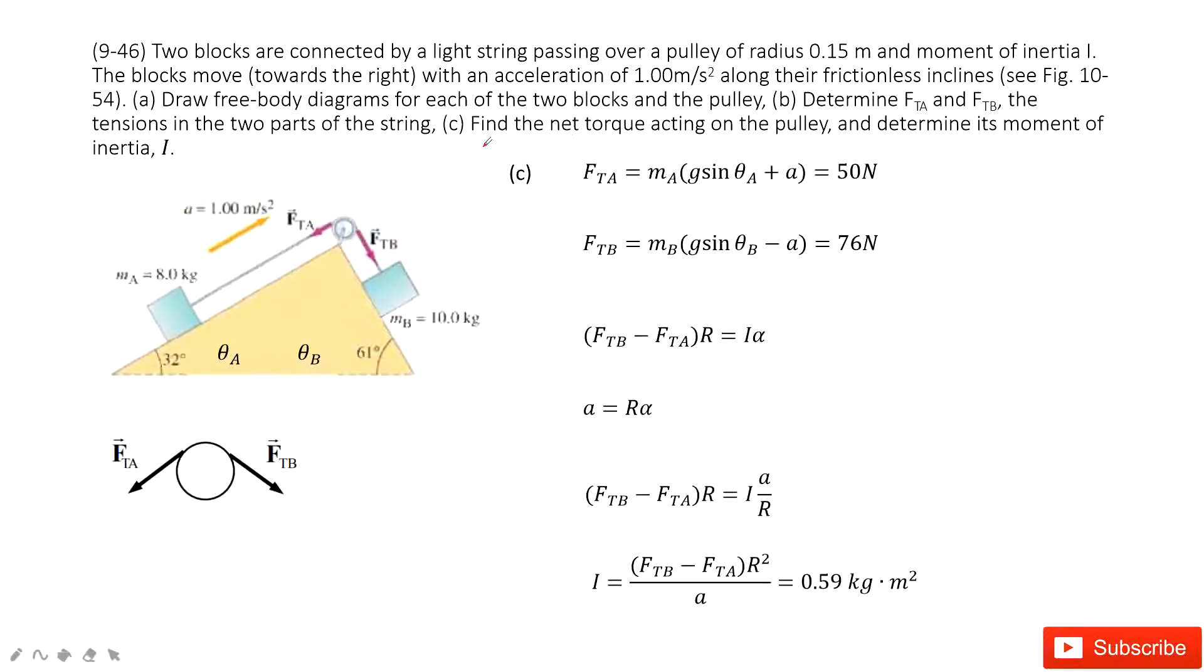Problem 3 asks us to find the net torque for the pulley. And then, how can we find the net torque and determine the moment of inertia? The torque for this one is net force times the radius R. And the R is given. Can you find the R? Yes, the R is given, 0.15 m.